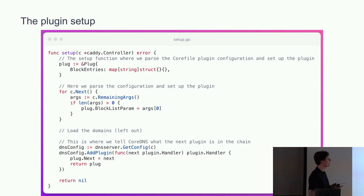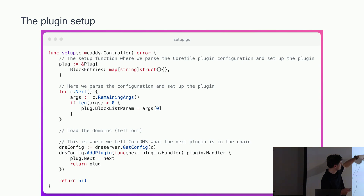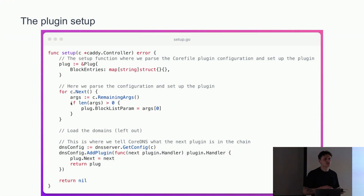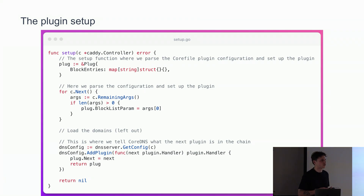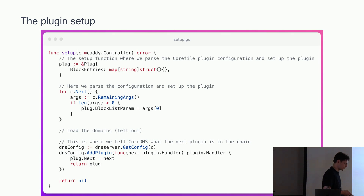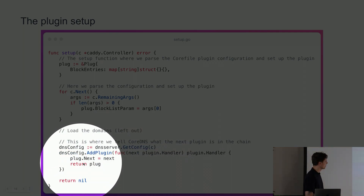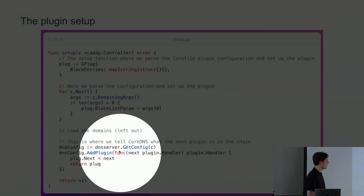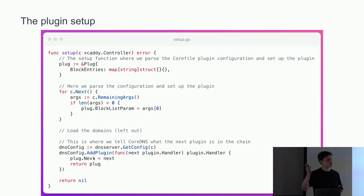Now the setup part. Once the Corefile detects it has the ad blocker plugin configured, it will call this setup function. At the top we initialize the plug struct. In the second part we parse the Corefile configuration — fairly simple, we're just going to receive the file we need to load as the first argument. With the forward plugin you can go really complex with configuration, but here we kept it simple. I left out the domain parsing since it's not that important — it's just a text file with one domain per line. At the bottom we return our plug struct conforming to the plugin.Handler interface and specify the next plugin.